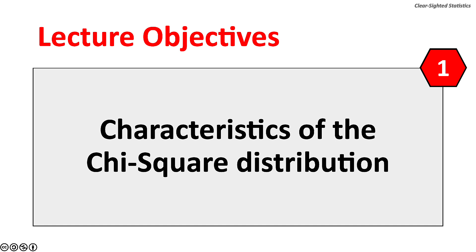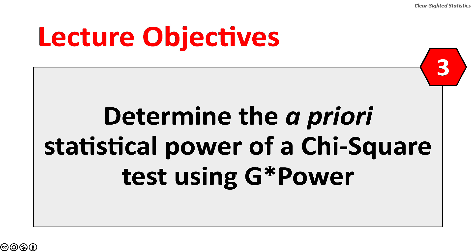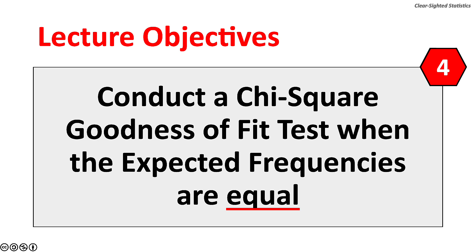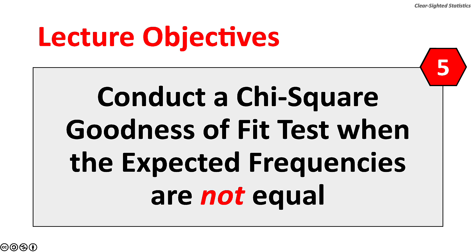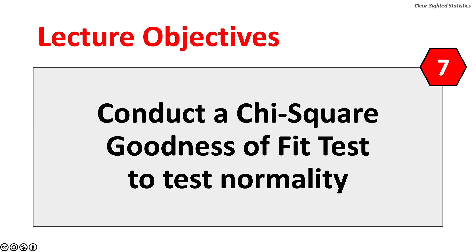This lecture has seven objectives: (1) the characteristics of the Chi-square distribution will be presented; (2) the requirements of Chi-square tests will be explained; (3) the a-priori statistical power of a Chi-square test will be calculated using G-Power; (4) a Chi-square goodness-of-fit test will be conducted when the expected frequencies are equal; (5) when they are not equal; (6) a Chi-square test for contingency tables, also known as a Chi-square test of independence, will be conducted; and (7) we will conduct a Chi-square goodness-of-fit test to test the normality of the data.